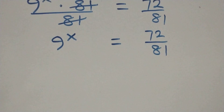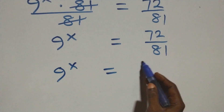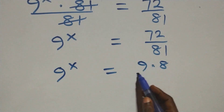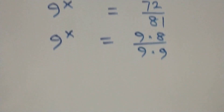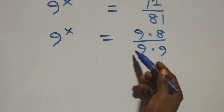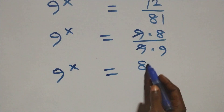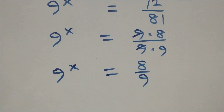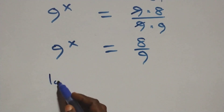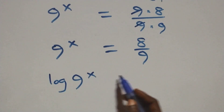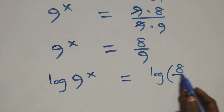This can also be written as 9 raised to power x equals 9 times 8 over 9 times 9. The next step, we take the log on both sides. We have log of 9 raised to power x equals log of 8 over 9.